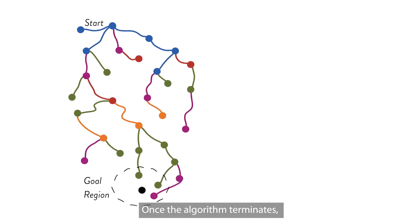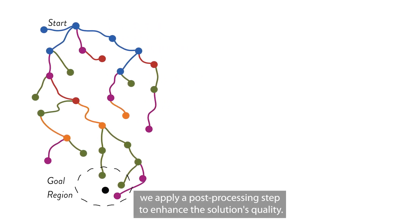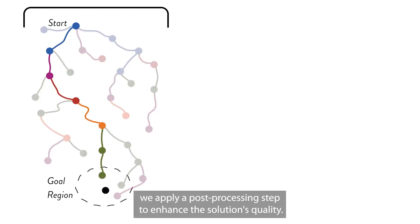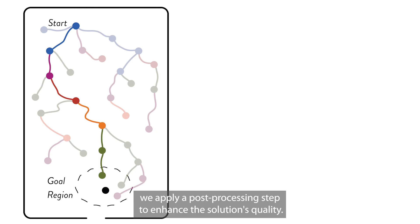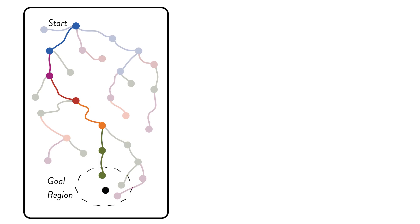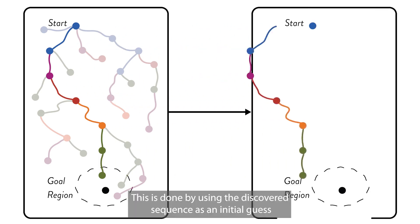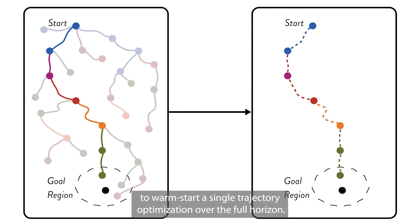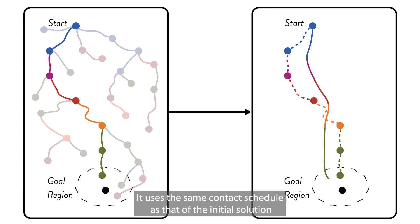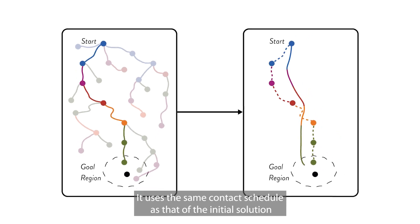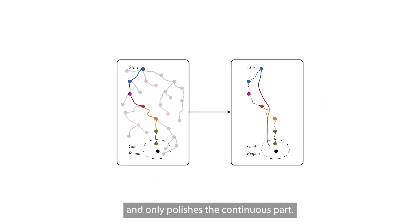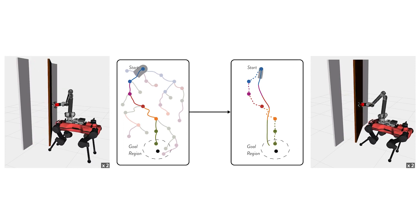Once the algorithm terminates, we apply a post-processing step to enhance the solution's quality. This is done by using the discovered sequence as an initial guess to warm-start a single-trajectory optimization over the full horizon. It uses the same contact schedule as that of the initial solution and only polishes the continuous part.